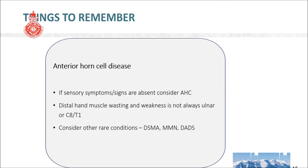Things to remember in this case: if sensory symptoms and signs are absent, always consider the possibility of anterior horn cell disease. The common conditions causing distal hand muscle wasting are ulnar nerve and C8-T1 involvement, but there can be other rare conditions like distal spinal muscular atrophy — as in this case — and multifocal motor neuropathy.